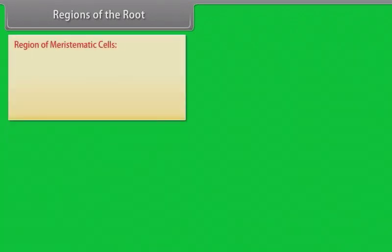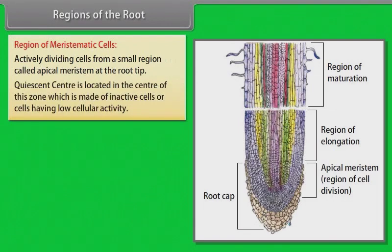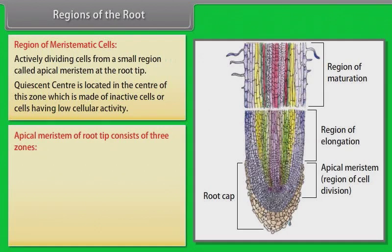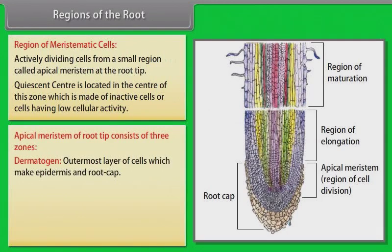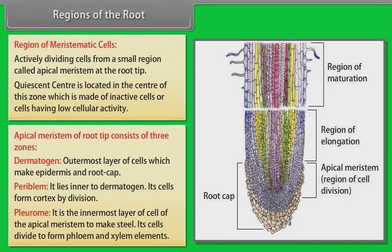Region of meristematic cells: Actively dividing cells form a small region called apical meristem at the root tip. The quiescent center is located in the center of this zone, made of inactive cells or cells having low cellular activity. The apical meristem consists of three zones: Dermatogen — outermost layer of cells which make epidermis and root cap; Periblem — lies inner to dermatogen, its cells form cortex by division; and Plerome — the innermost layer, whose cells divide to form phloem and xylem elements.